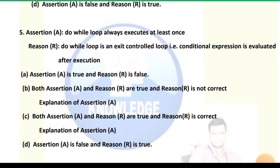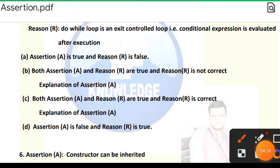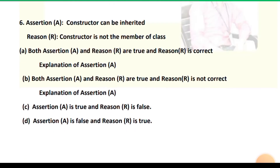Question 5 — Assertion: A do-while loop always executes at least once. Reason: A do-while loop is an exit control loop, meaning the conditional expression is evaluated after execution. The correct answer is option C: both assertion and reason are true, and the reason is the correct explanation.